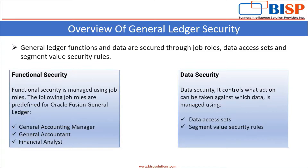There are two types of security provided by Oracle Fusion Application. First is Functional Security. In Functional Security, it is managed using Job Rules. The following Job Rules are predefined for Oracle Fusion General Ledger — these are the roles we assign to the user: General Accounting Manager, General Accountant, and Financial Analyst.